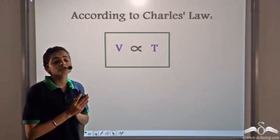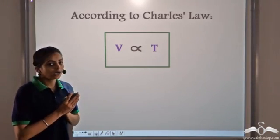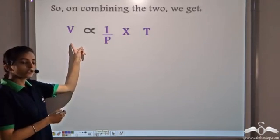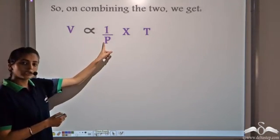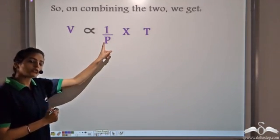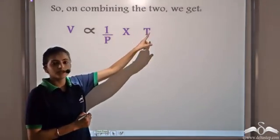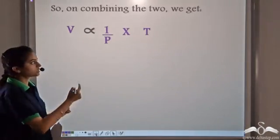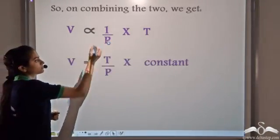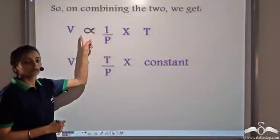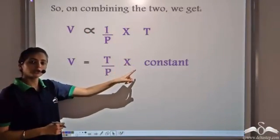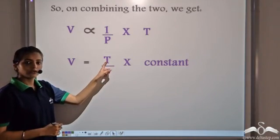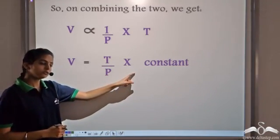Now if we combine Boyle's law and Charles' law — from Boyle's law, volume is inversely proportional to pressure, and from Charles' law, volume is directly proportional to temperature. When we combine them, to remove the proportionality sign, we multiply with a constant. So we get that volume equals temperature divided by pressure, multiplied by a constant.